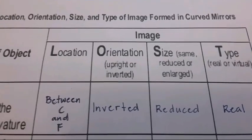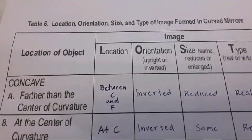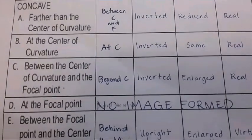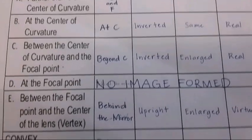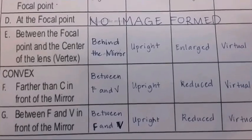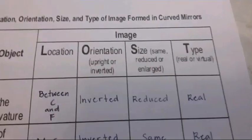The size of the image. Same, reduced, or enlarged. A. Reduced. B. Same. C. Enlarged. D. No image formed. E. Enlarged. F. Reduced. G. Reduced.